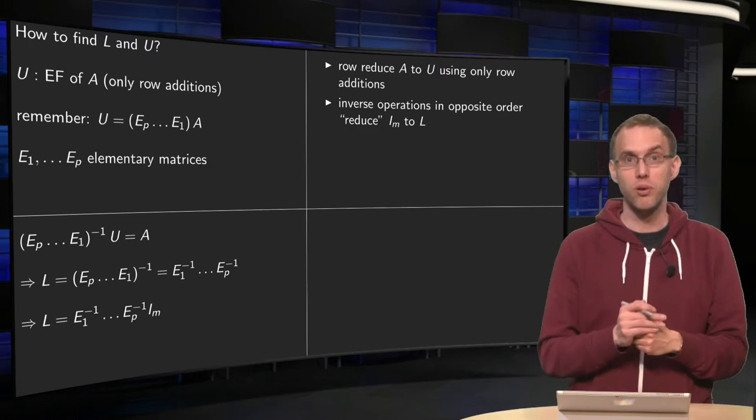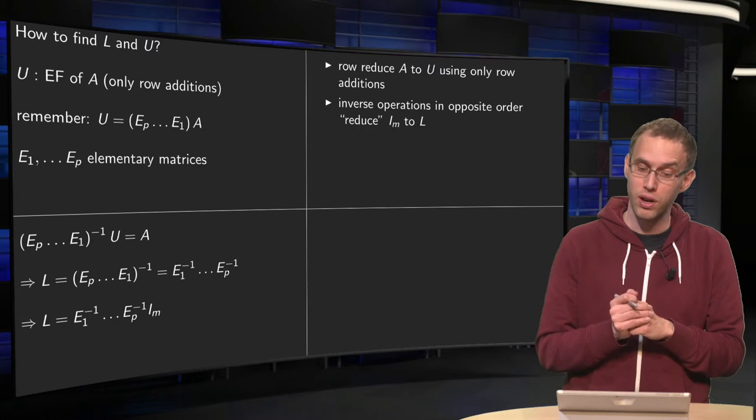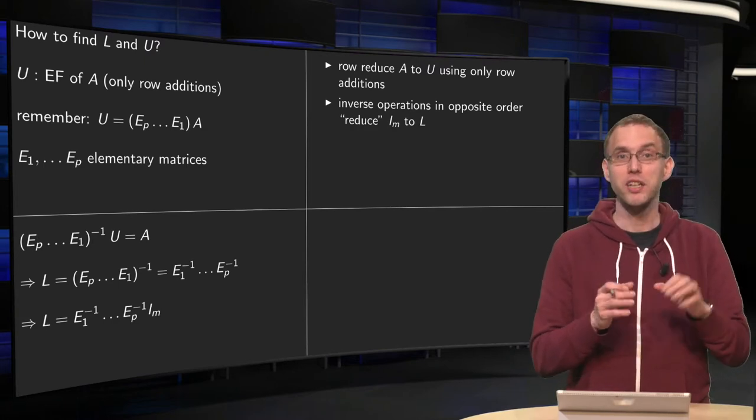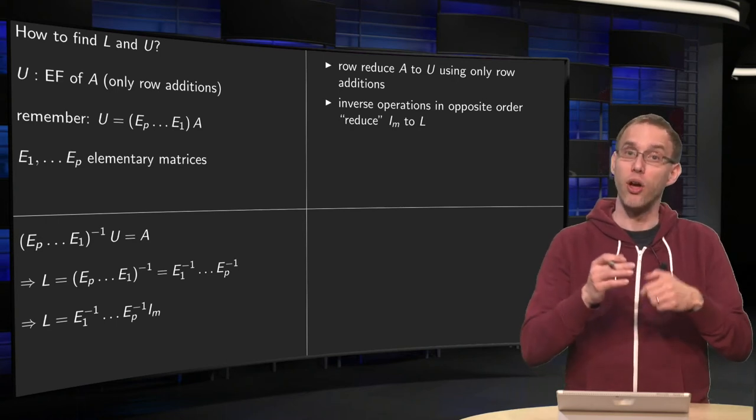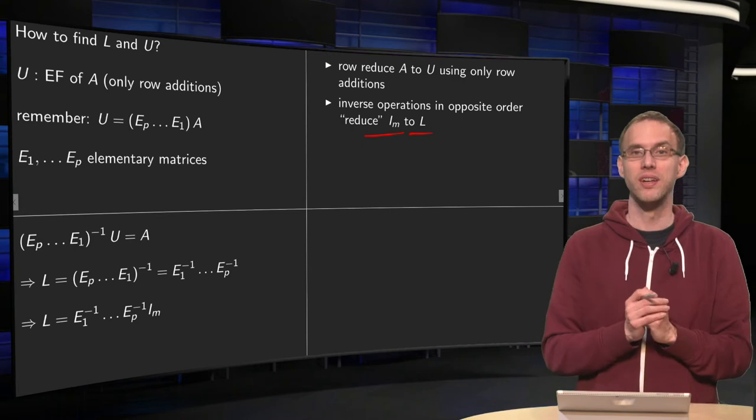You reduce A to U using only row additions. You know how to do that. You did it a lot of times already. And now those same operations, the inverse of those operations in the inverse order, those reduce your identity matrix to L.